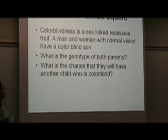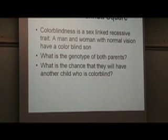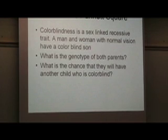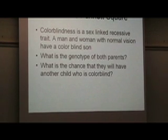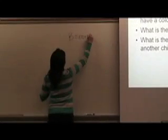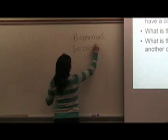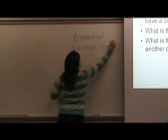A man and a woman with normal vision have a colorblind son. So let's figure out what we know. We know that, let's use B for colorblind, so we know that if they have a big B, they have normal vision. If they have a little b, they're going to be colorblind.